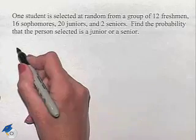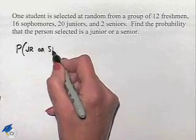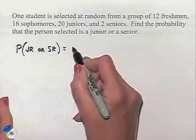We'll write that down as follows. We want the probability that we're going to choose a junior or a senior. To evaluate this, we're going to think about it as follows.